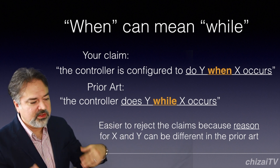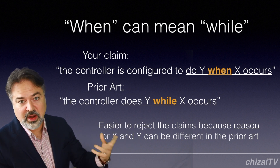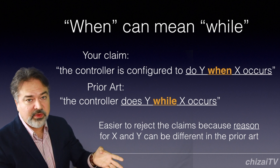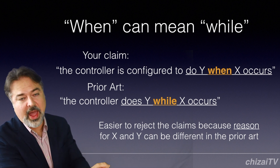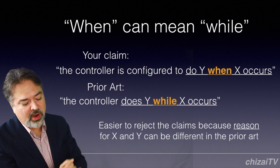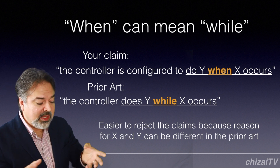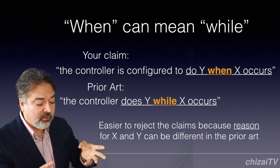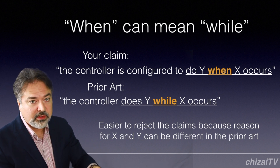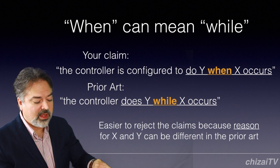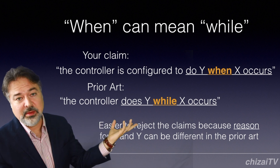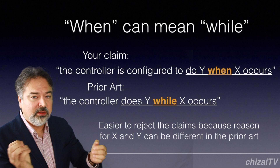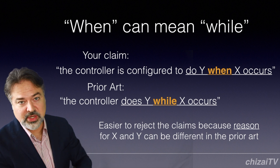Just X and Y occurring at the same time — those two functions are going on and happening at the same time. But in your invention, when X occurs, Y happens. The problem is when you're using 'when,' it can read on prior art that says if X and Y just happen at the same time for any reason, your claim can be rejected. So how can we fix this situation?